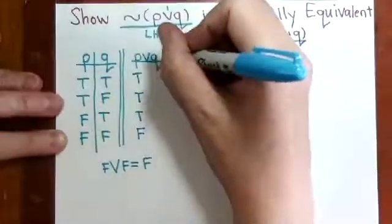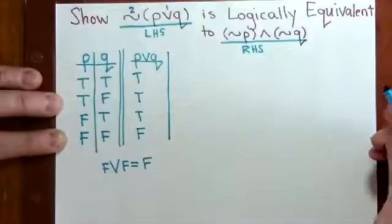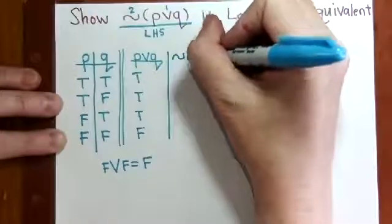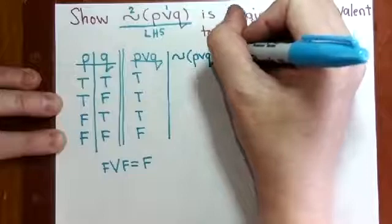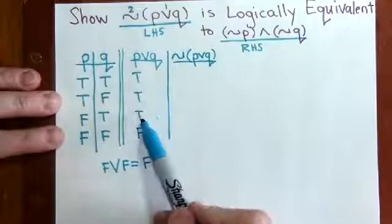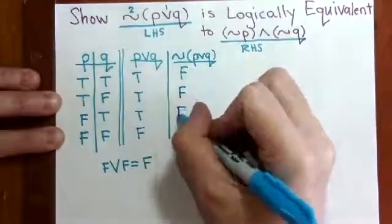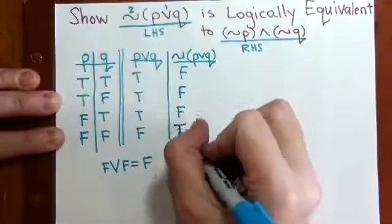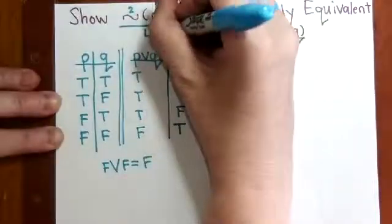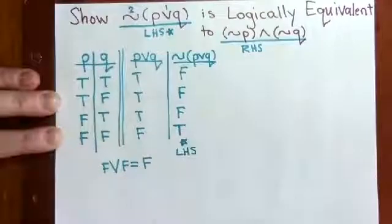And now what we'll do is negate that column. So we negate the previous column. We just look at Ts and turn them to Fs, and we look at the F and turn it to a T. Now we're done with the left-hand side right here in this column.